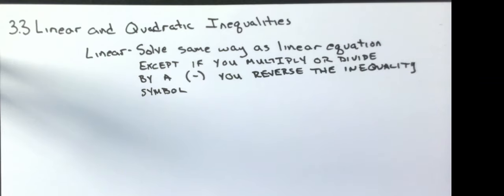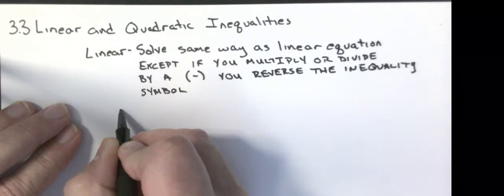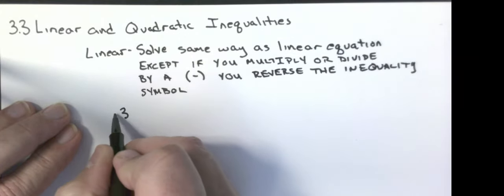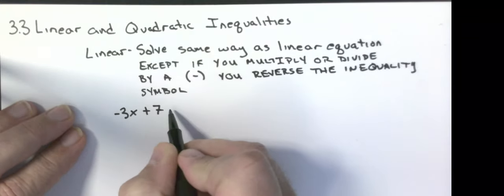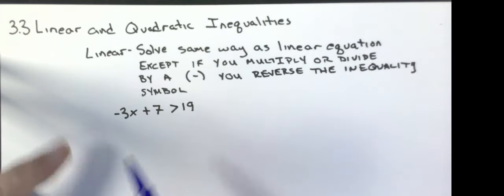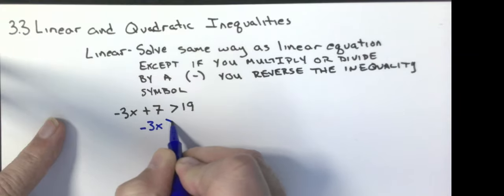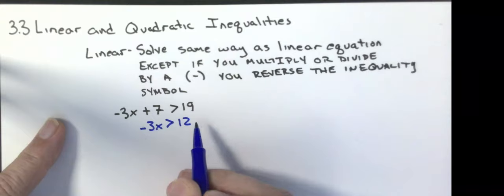To go along with an example, we're going to do one from the notes. I'm going to do negative 3x plus 7 is greater than 19. My first step is I'm going to subtract 7 from both sides. That's going to give me negative 3x is greater than 12. Then I'm going to divide both sides by negative 3.